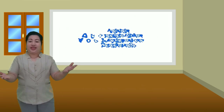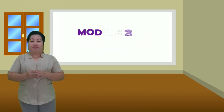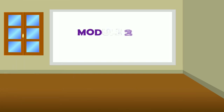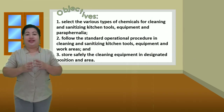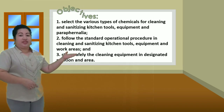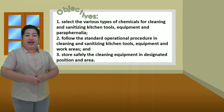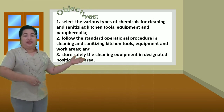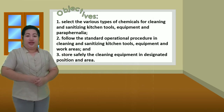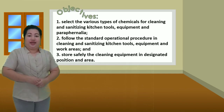Welcome to our second module in Kukiri: Maintain appropriate kitchen tools, equipment, and paraphernalia. At the end of the lesson, you are expected to: first, select the various types of chemicals for cleaning and sanitizing kitchen tools, equipment, and paraphernalia; second, follow the standard operational procedure in cleaning and sanitizing kitchen tools, equipment, and work areas; and third, store safely the cleaning equipment in designated position and area.